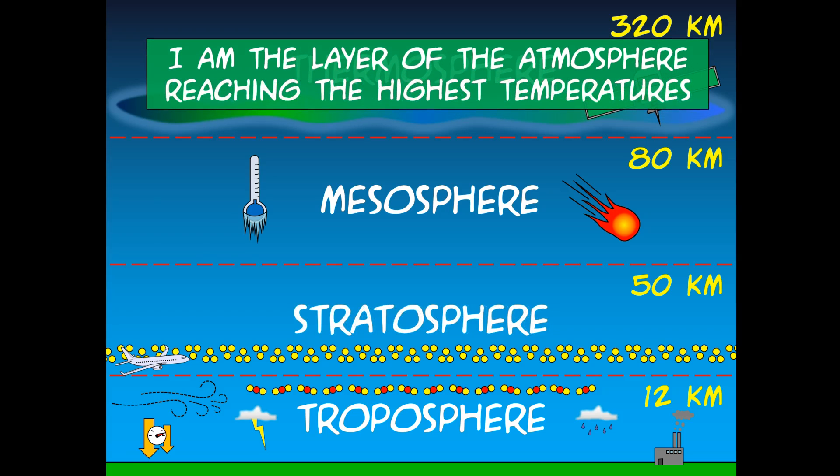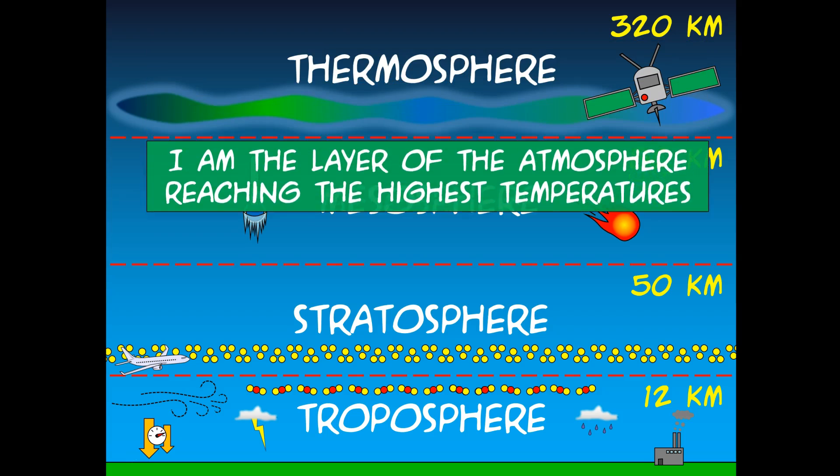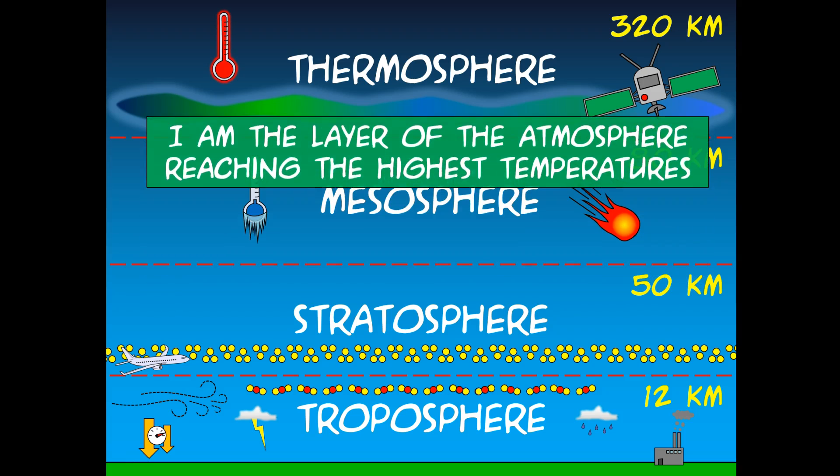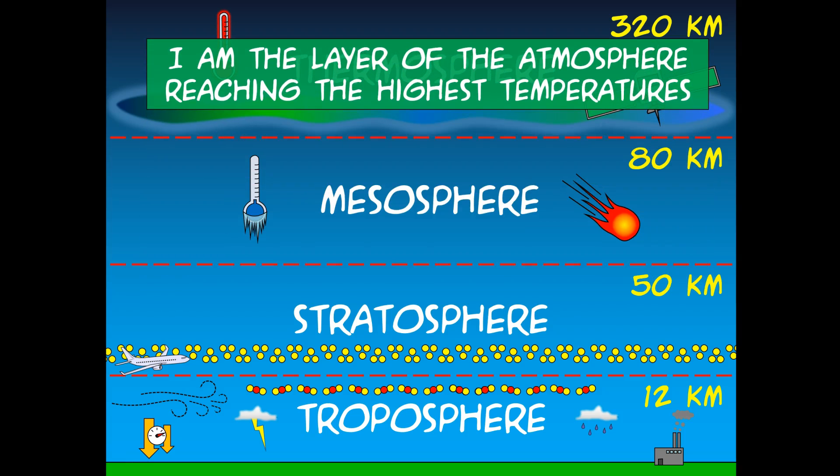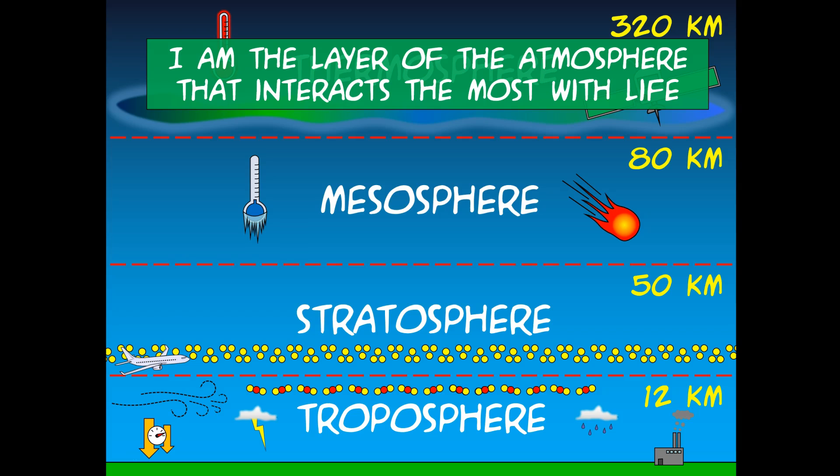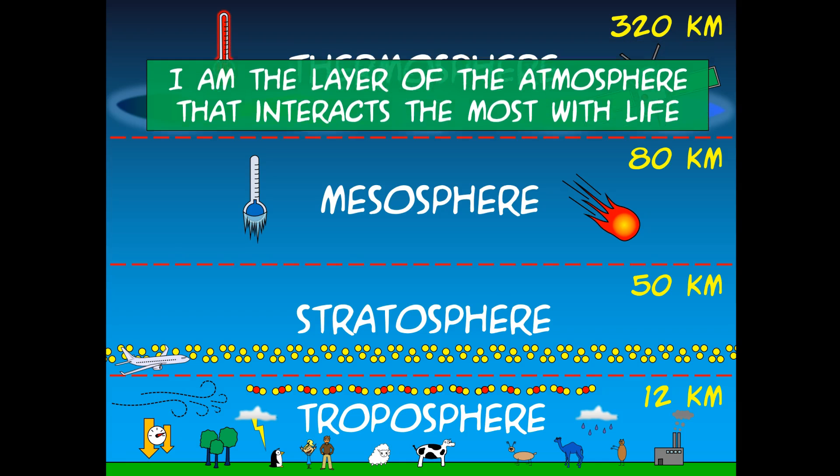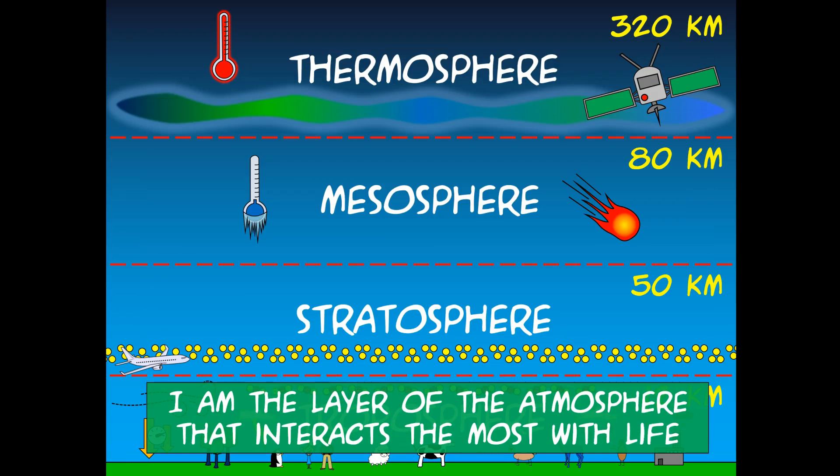This is the layer of the atmosphere reaching the highest temperatures. Any guesses on where that is? You guessed it right! It was the thermosphere. This is the layer of the atmosphere that interacts the most with life. Where would that be? Where do we live? We're an important form of life. The troposphere. The troposphere is the layer that interacts the most with life.